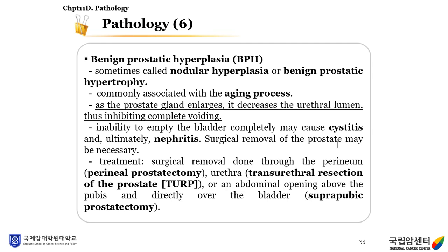BPH—benign prostatic hyperplasia—is a very common disease, sometimes called nodular hyperplasia or benign prostatic hypertrophy. BPH is commonly associated with the aging process. As the prostate gland enlarges, it decreases the urethral lumen, inhibiting complete voiding. Inability to empty the bladder completely may cause cystitis and ultimately nephritis. Surgical removal of the prostate may be necessary. Treatment can be done through perineal prostatectomy, transurethral resection (TURP), or an abdominal opening above the pubis directly over the bladder, called suprapubic prostatectomy.